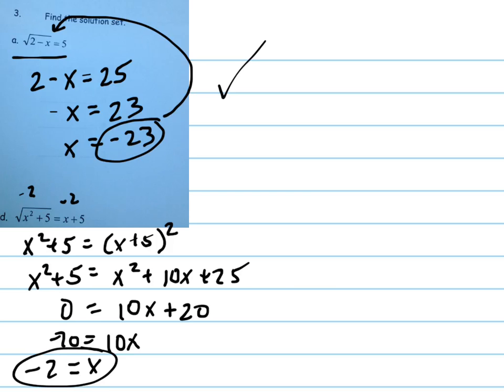You'll get 4 plus 5, which equals 9. The square root of 9 is 3. Negative 2 plus 5 is 3. That checks out as well. So that is, in fact, a solution.